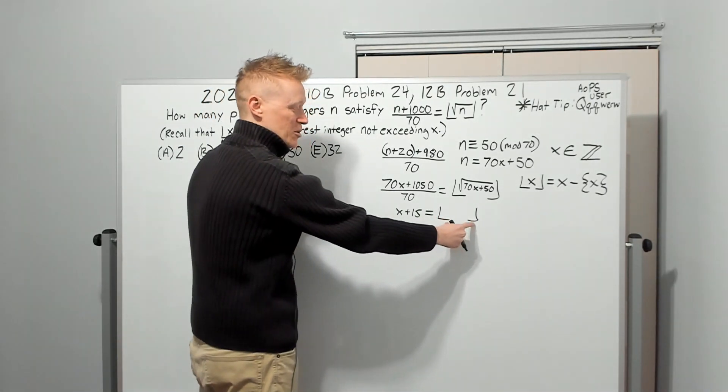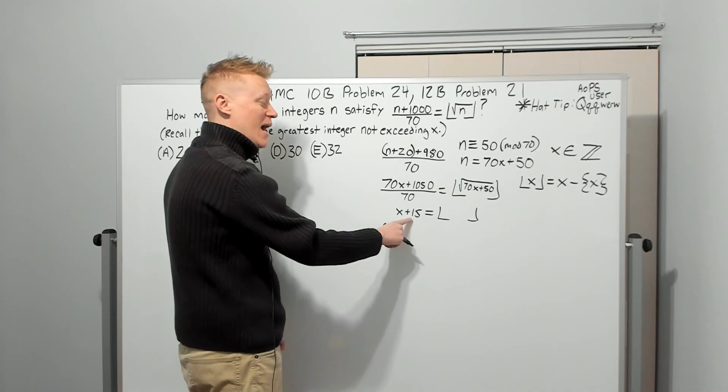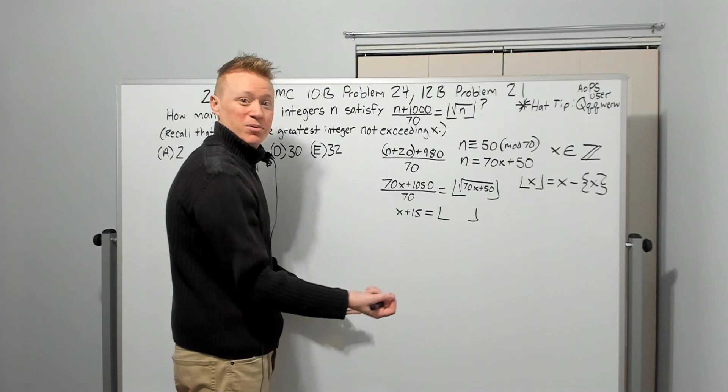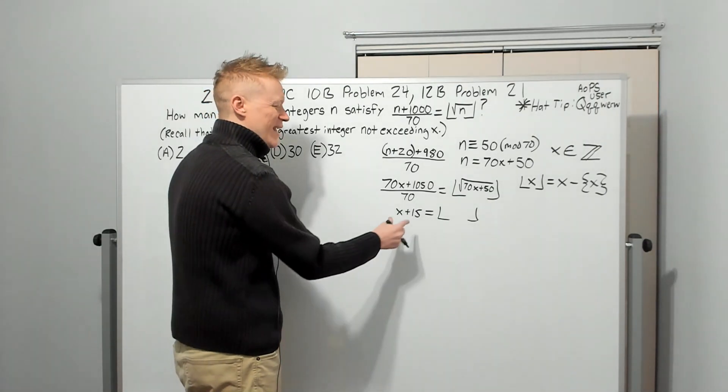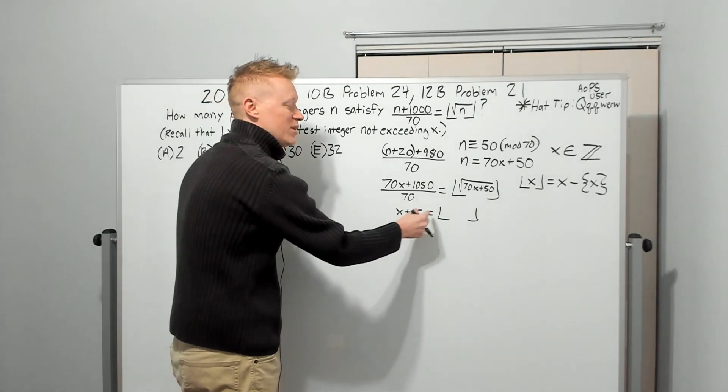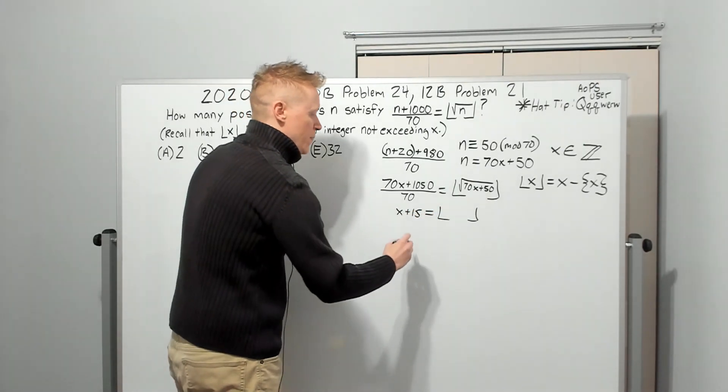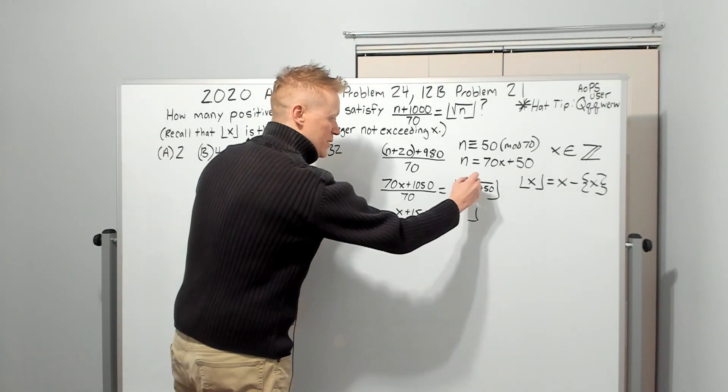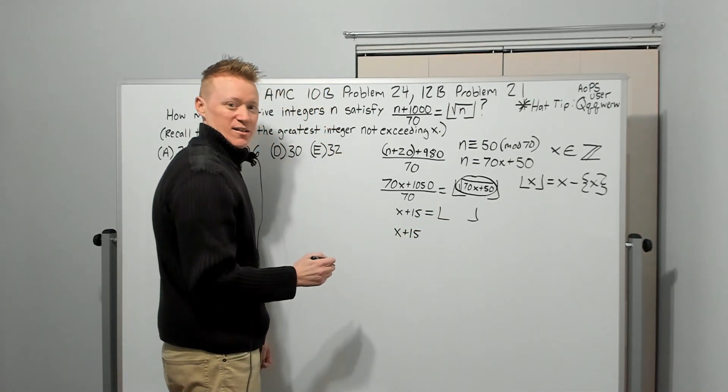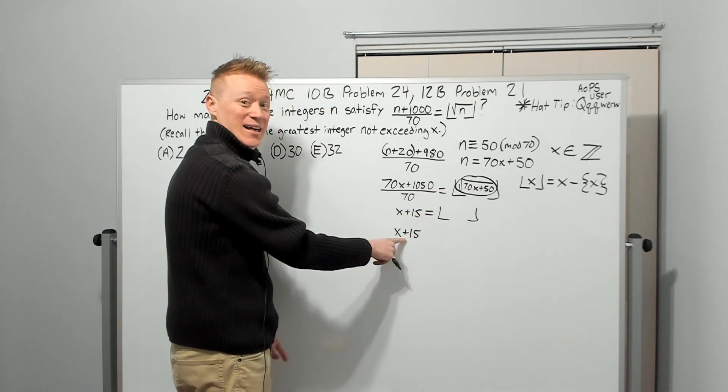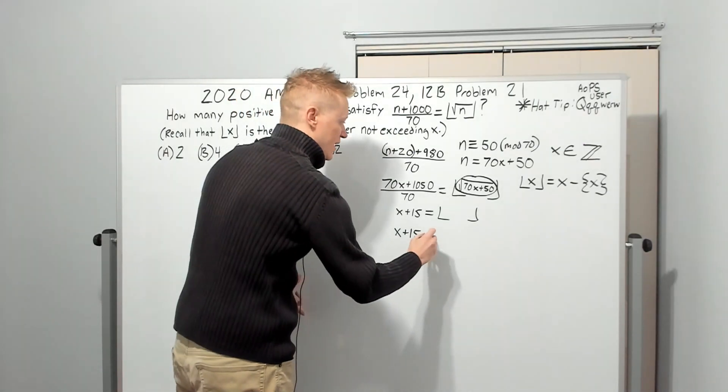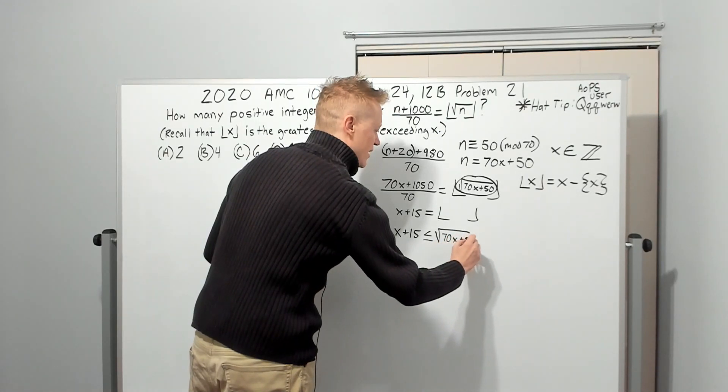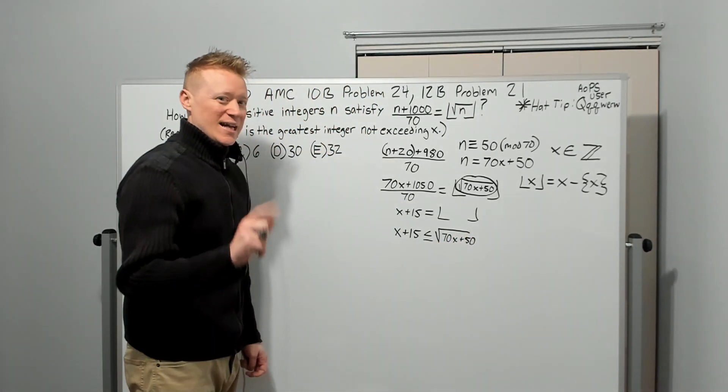This is an integer, but it's either bigger than this number, but not more than one bigger than it. If it was more than one bigger than it, it would equal X + 16 when you rounded it down, right? So it's like X + 15 plus a tiny, small fractional amount, which means we can say that X + 15 has to be less than or equal to this expression, right? This is going to have to be at least the size likely a little bit more. And we can say that it's less than or equal to the square root of 70X + 50.